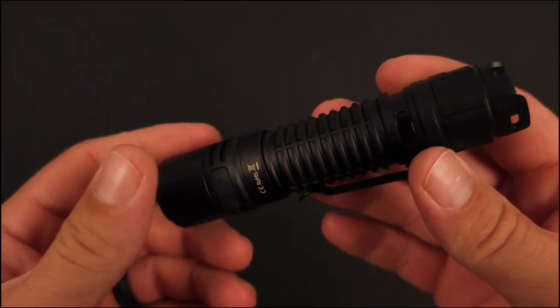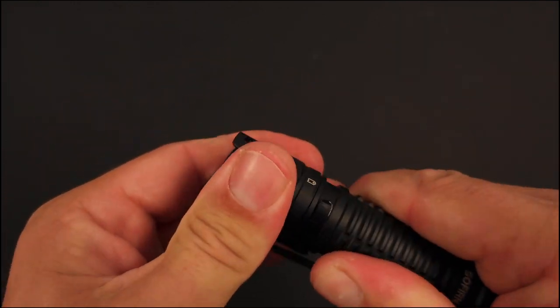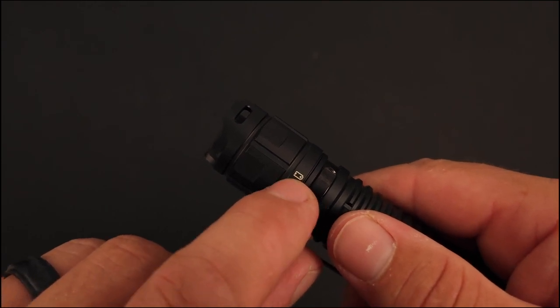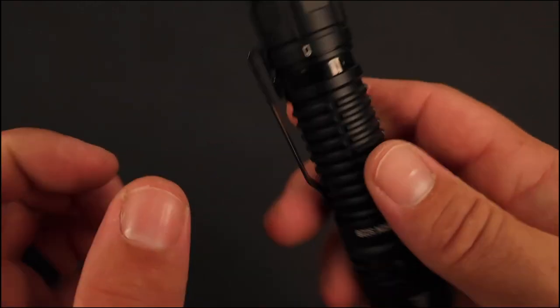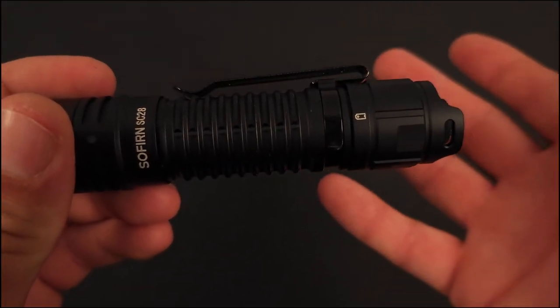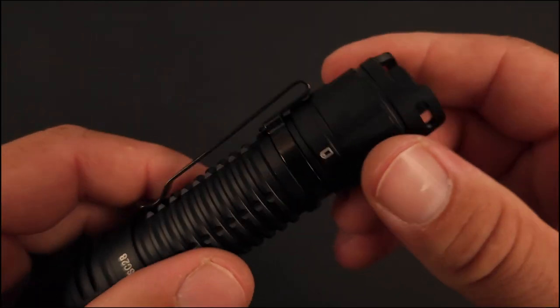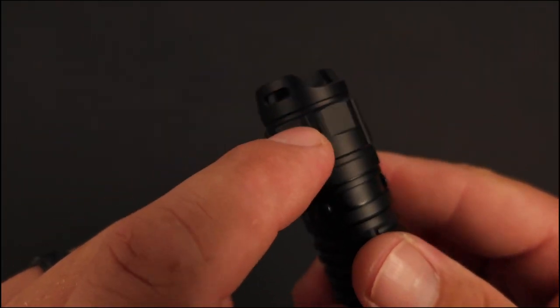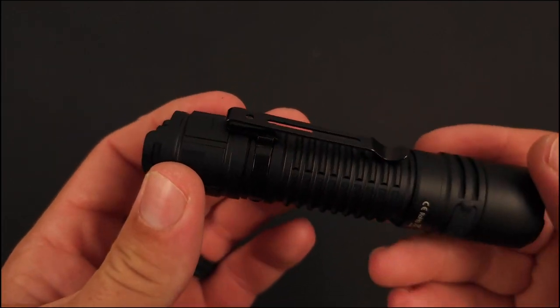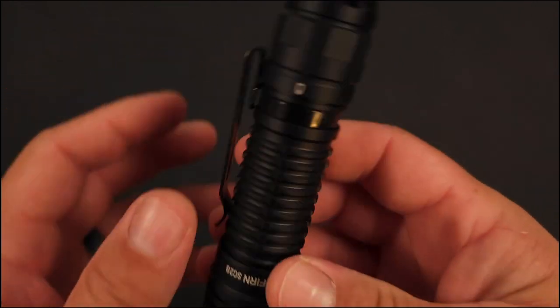We'll move over to the tail cap here. The tail cap lets you know the battery indicator right here, which way that battery has to go in. But it does have reverse polarity protection, so if you do happen to throw it in the wrong way, don't worry, you'll be fine.